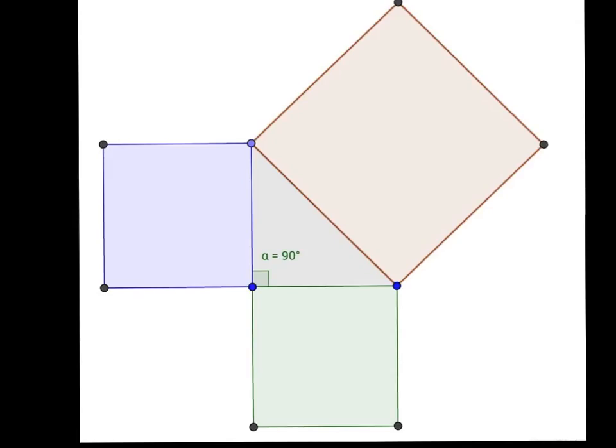Before we talk about the Pythagorean Theorem, we've got to talk about what it applies to. The Pythagorean Theorem applies to right triangles, which have a 90 degree angle. This will apply to any right triangle, and we'll just have to label some sides here.